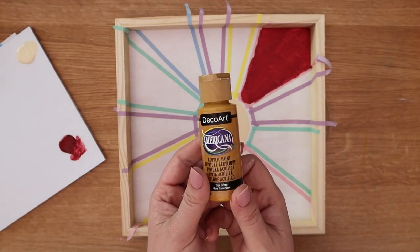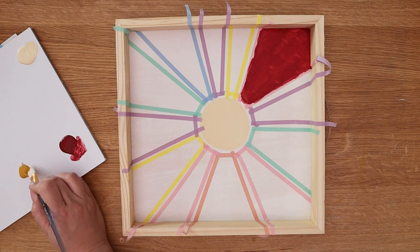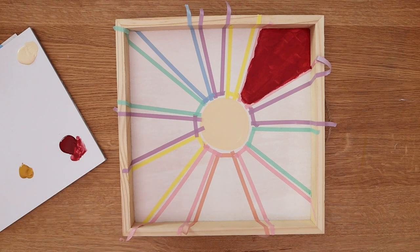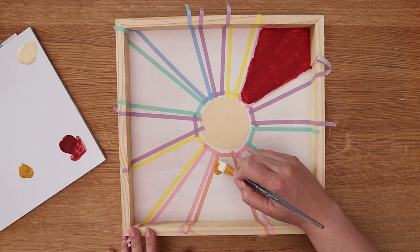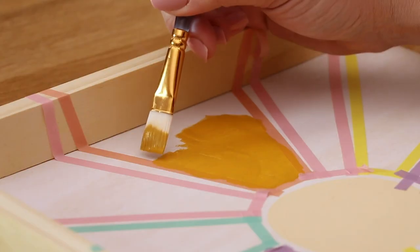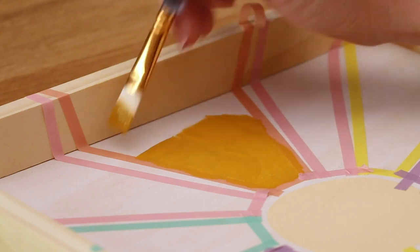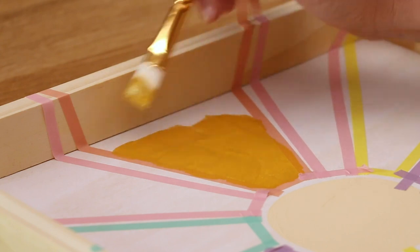Next I'm going to paint my yellow section and for that I'm using a deeper ochre color of yellow. I'm going to skip over three sections from my burgundy section and then fill that in. Again I'm using that same technique of pulling the paint brush away from the tape instead of pushing it towards it.